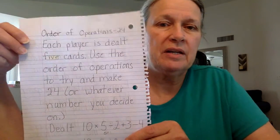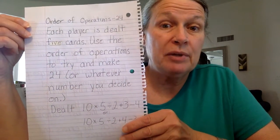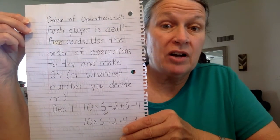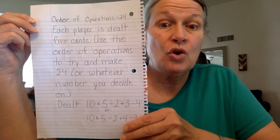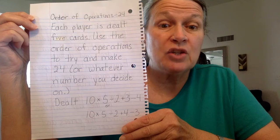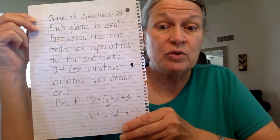This game is called Order of Operations 24. Each player is dealt five cards and you use the order of operations to try and make 24, or whatever number you decide on.